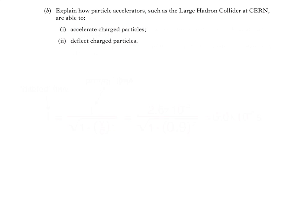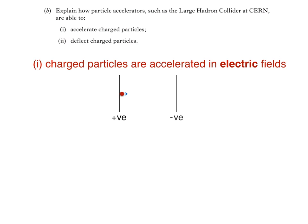In part B, we're asked to explain how particle accelerators, such as the large hadron collider at CERN, are able to accelerate charged particles and deflect charged particles. Answering part 1, charged particles accelerate in electric fields. Here we can see a positively charged particle which, when released, accelerates towards the negative terminal. The blue arrow represents the particle's velocity vector.